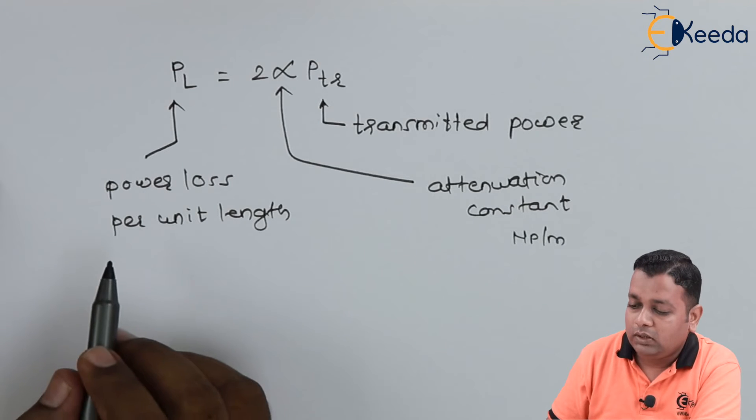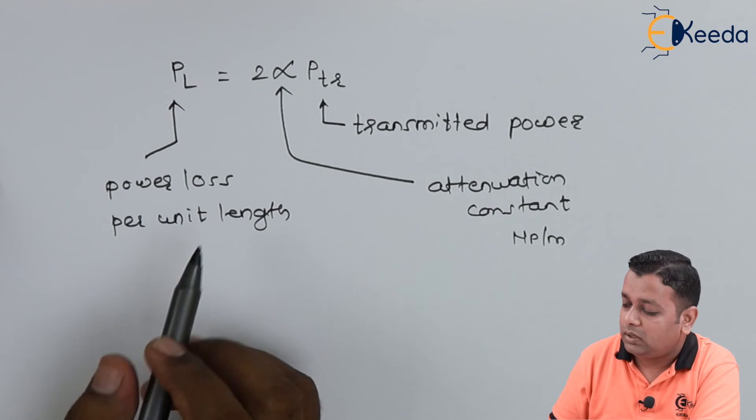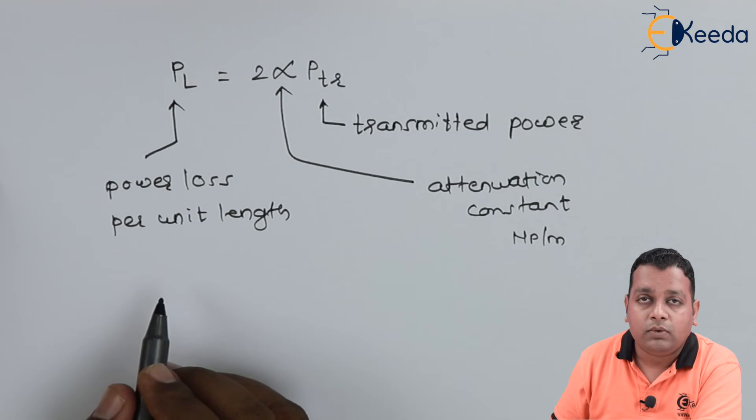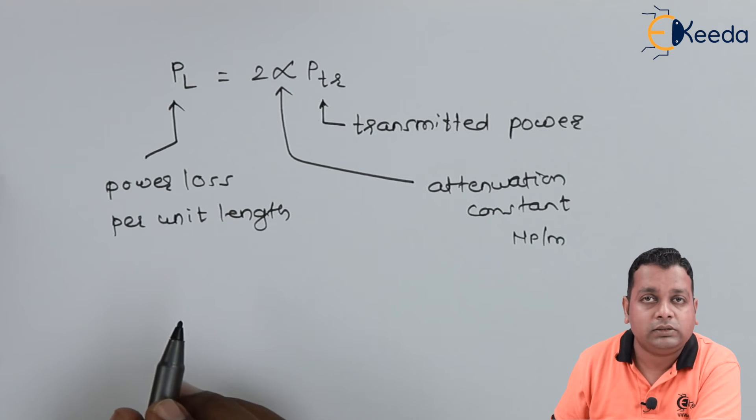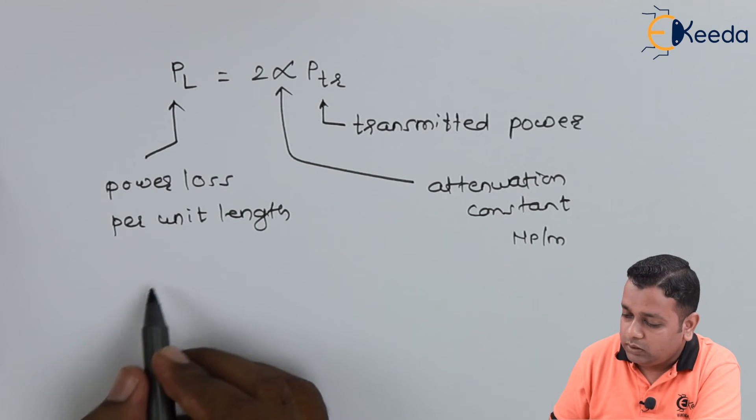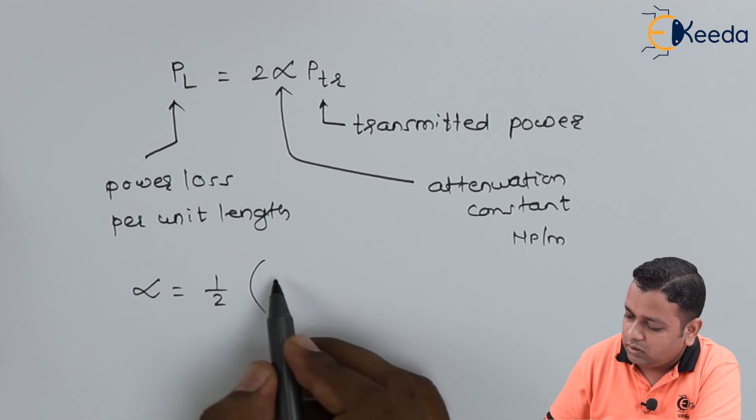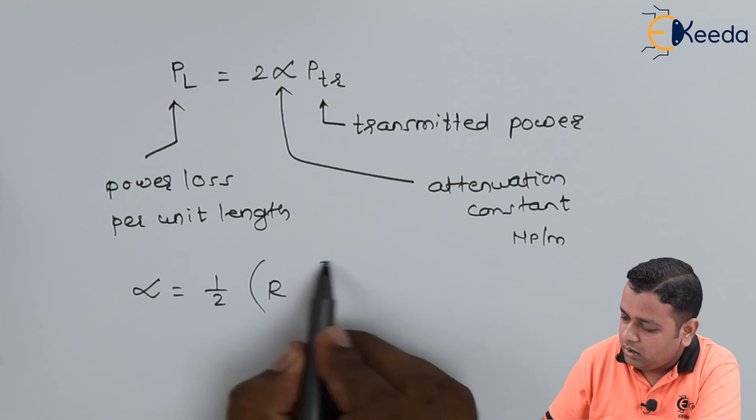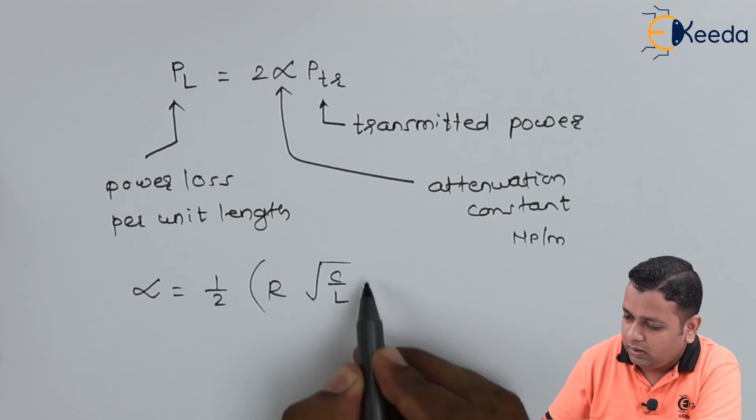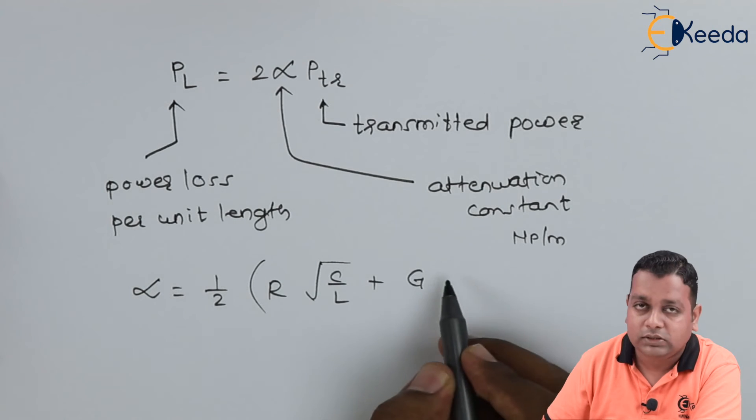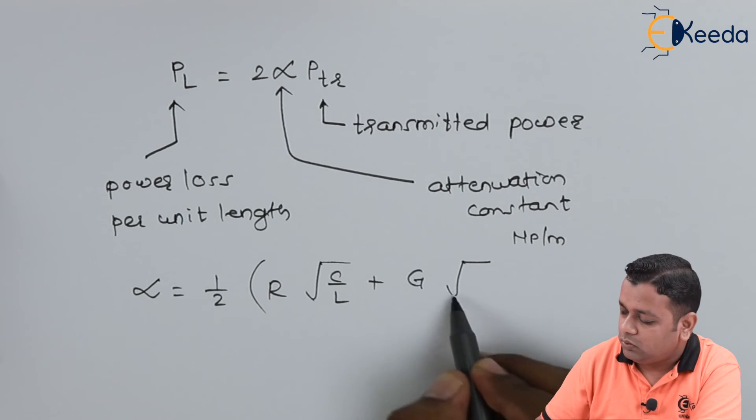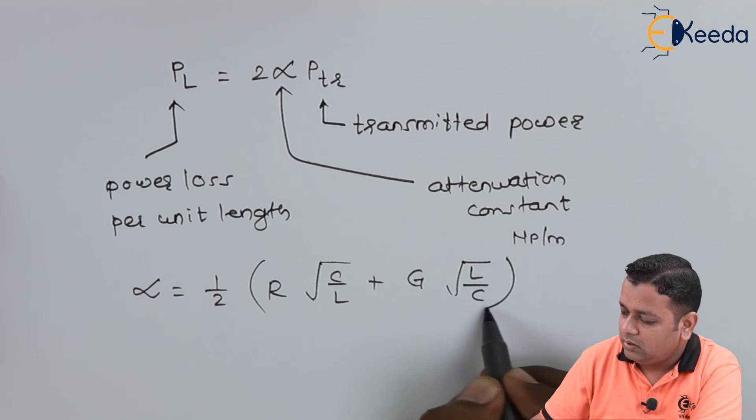Now in general the attenuation constant in terms of the lumped elements from the circuit model we can obtain as alpha is equal to 1/2 in the bracket, capital R under root of C by L, added with the conductance G in multiplication to the square root of L by C.